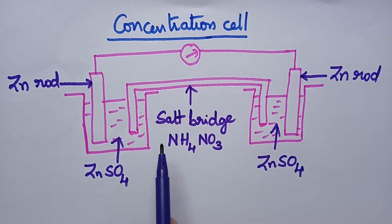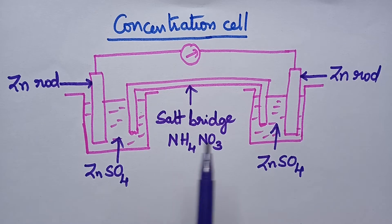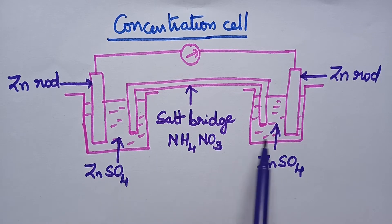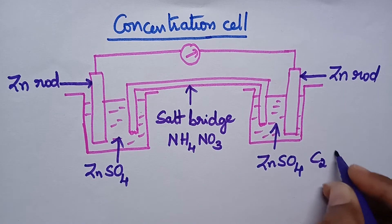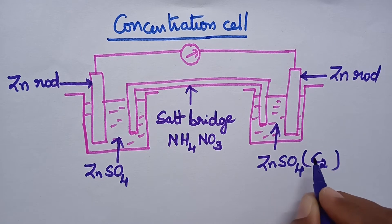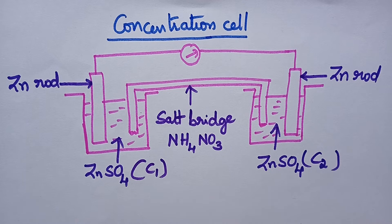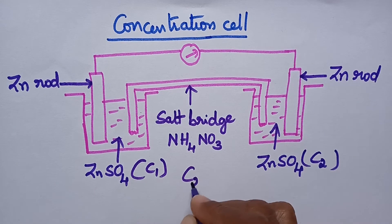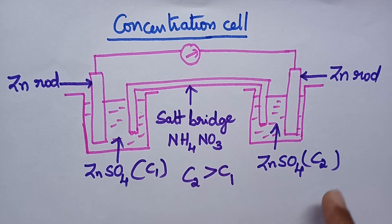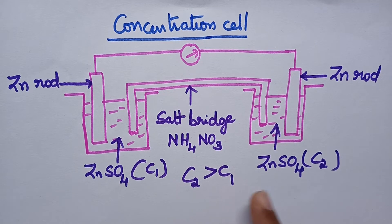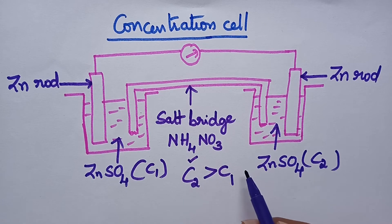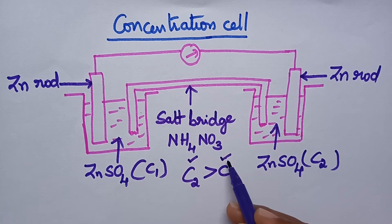Then how will current flow in this concentration cell? The only difference is the difference in the concentration of the electrolytic solution. Always the concentration of the cathodic solution is greater than the anodic solution — that means C2 is greater than C1. Due to this difference in concentration, transfer of material always takes place from the higher concentration solution to the lower concentration solution, and this creates electricity.